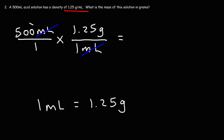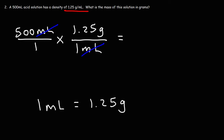We want to use the units of density in such a way that the units of milliliters will cancel. So this time, we have two numbers on top, which indicates that we're going to perform a multiplication. So 500 times 1.25 is 625. This acid solution has a mass of 625 grams.